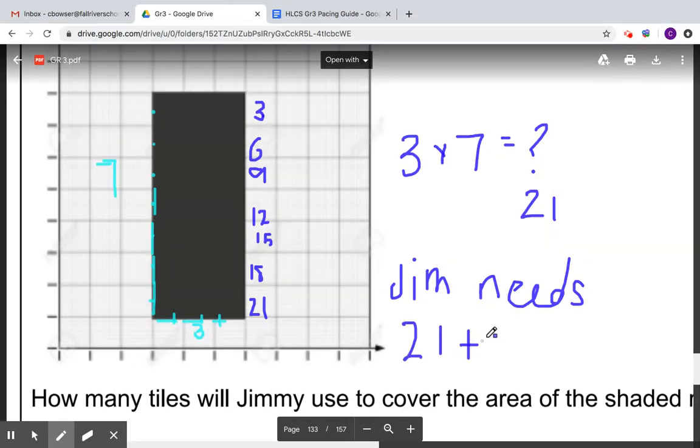Oh, I made a mistake. 21 tiles. Because this is how many tiles does he need? And it says, Jim needs 21 tiles.